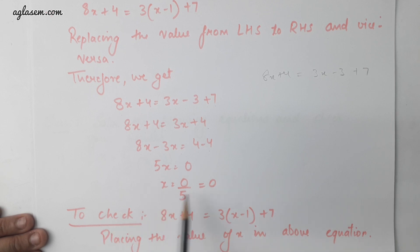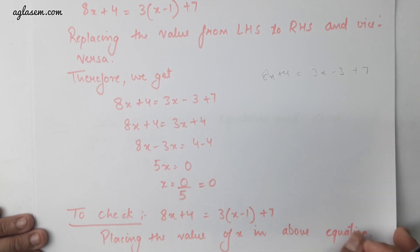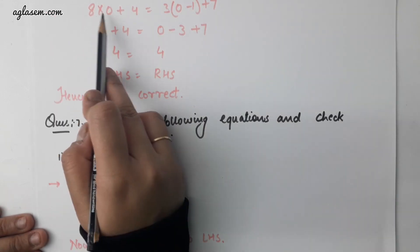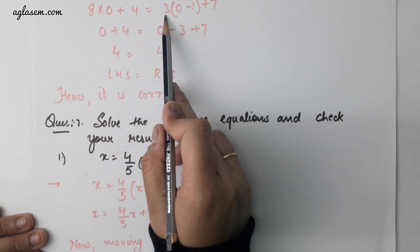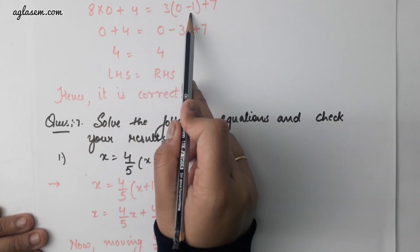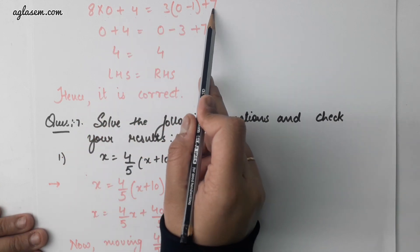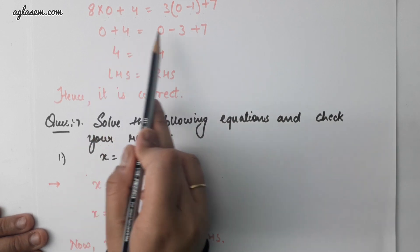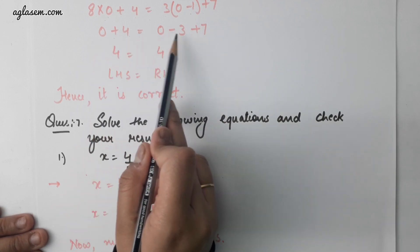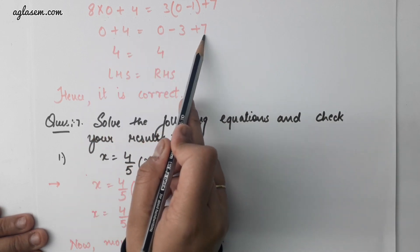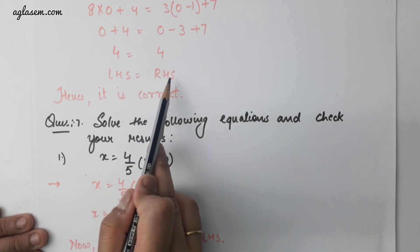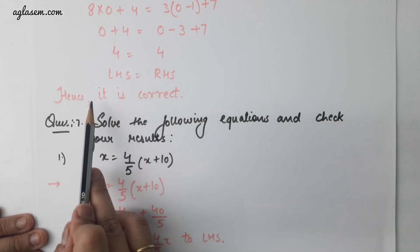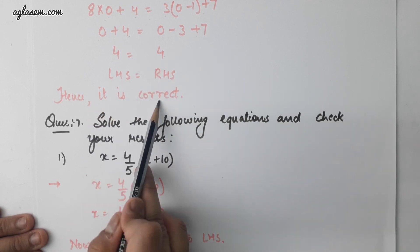To check, we will put x equals to 0 in the given equation. 8 into 0 plus 4 equals to 3 into 0 minus 1 plus 7. So 0 plus 4 is equal to 0 minus 3 plus 7, giving 4 is equal to 4. Therefore, LHS is equal to RHS and hence it is correct.